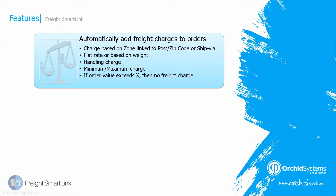FreightSmartLink can be configured to automatically add freight charges to sales orders, shipments or invoices. The charge can be based on a zone, and the zone is linked either to the postcode or the ship via on the sales order, shipment or invoice.